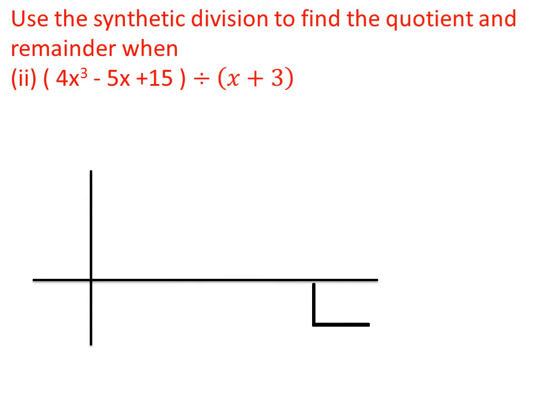Now we solve the next question: find the quotient and remainder using synthetic division. The question is: 4x³ - 5x + 15 is divisible by x + 3. Here 4x³ - 5x + 15 is the dividend and x + 3 is the divisor. We write the divisor in the form x - a: x + 3 = x - (-3), so the value of a is -3.